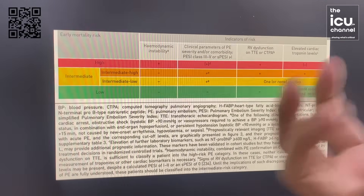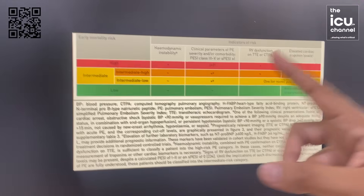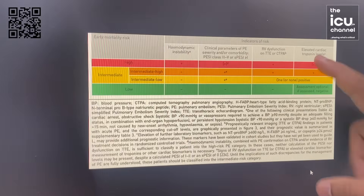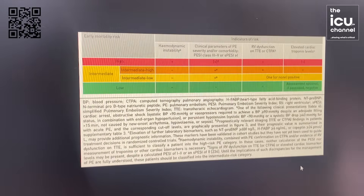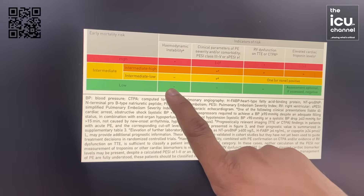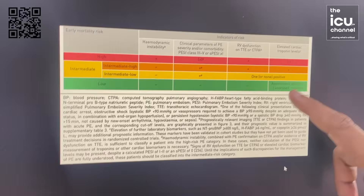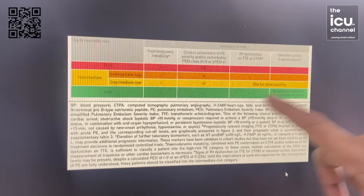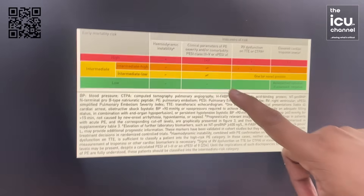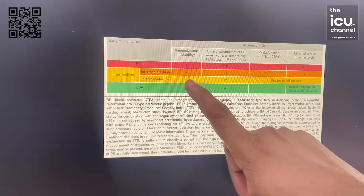RV dysfunction means structural changes on echo — elevated PA pressures or RV dilatation. Elevated cardiac troponin or pro-BNP levels indicate myocardial injury of the right ventricle. If the patient is hemodynamically stable, no evidence of RV dysfunction, and cardiac markers are negative, there is no strain on the heart and no myocardial injury. In that case, we don't need to thrombolyze — we can just continue with anticoagulants.